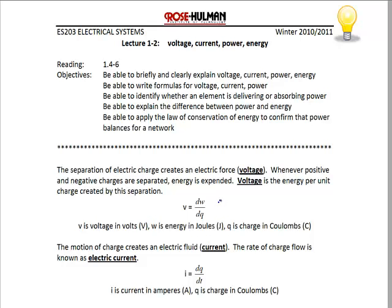The units for voltage are volts, and it's dw/dq, which is joules per coulomb. A voltage source typically represents the separation of charge by having a positive or a negative. If you have a circuit element, we represent the voltage by showing the potential difference with the positive and the negative.